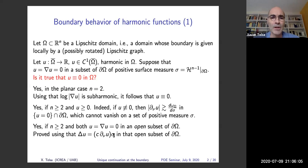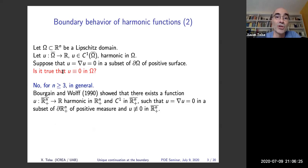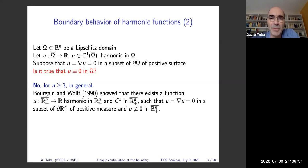Returning to the same question — U vanishing simultaneously with its gradient in a subset of positive surface measure — the answer is no in general dimensions. This was shown by Burgen and Wolf in 1990: they proved there are harmonic functions on the upper half-space, C^1 in the closure, such that they vanish simultaneously with the gradient in a subset of positive surface measure of the boundary, yet these functions are not identically zero.